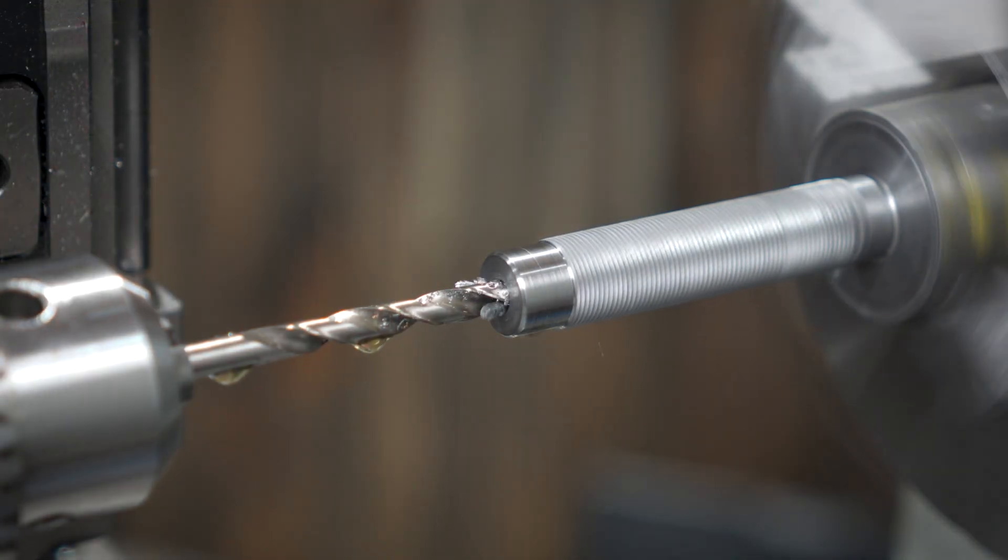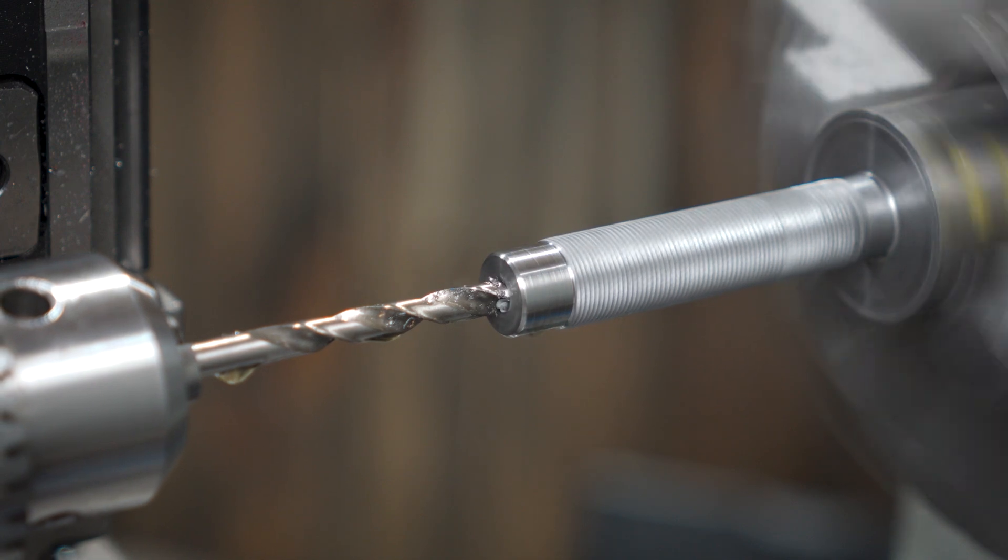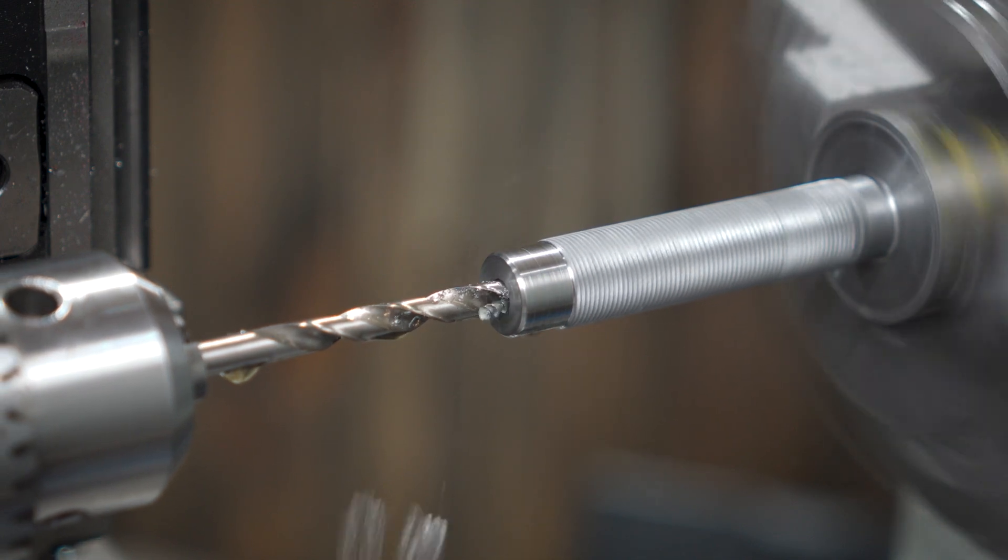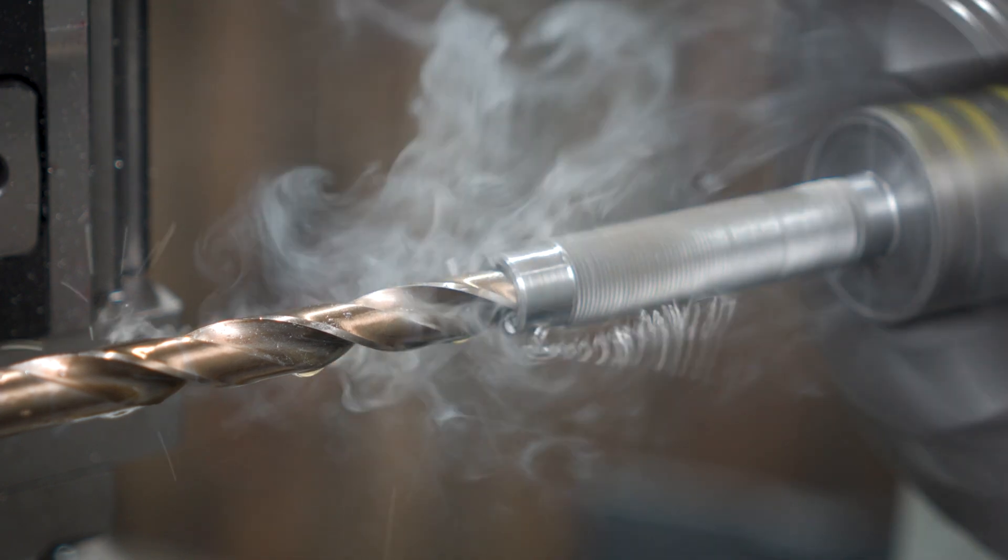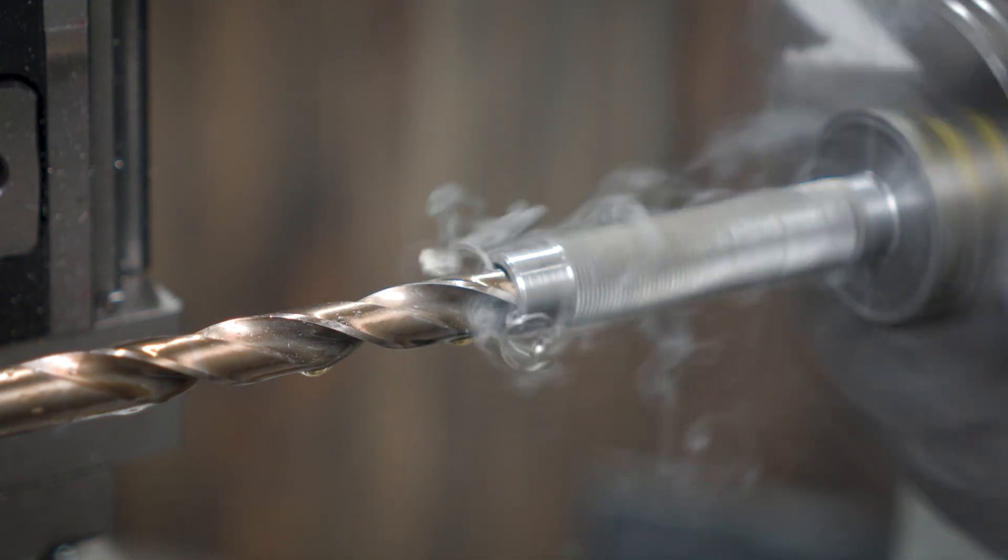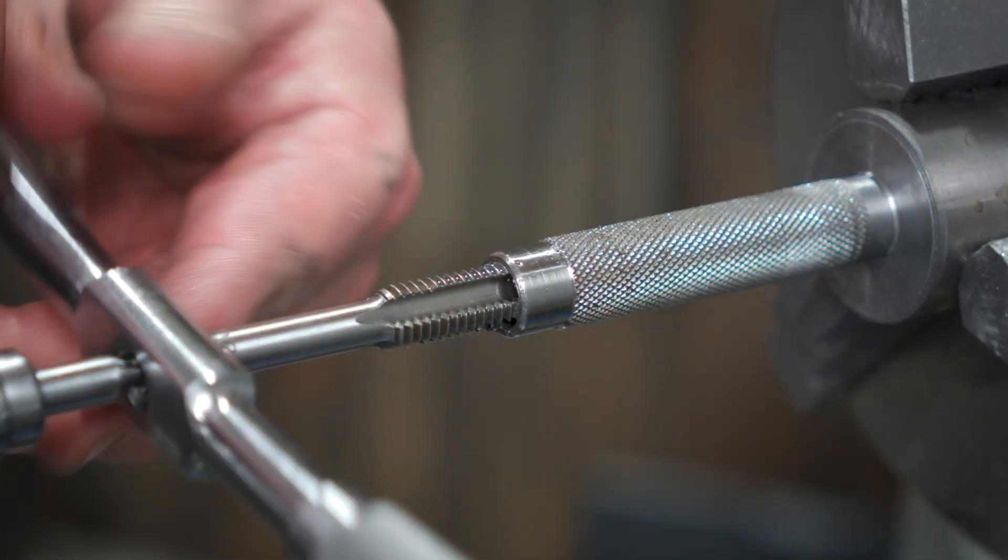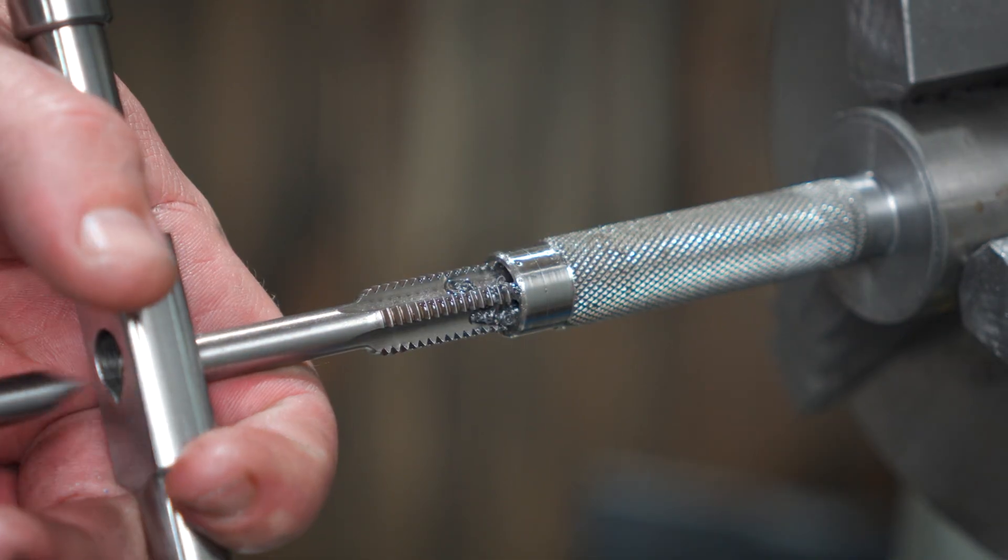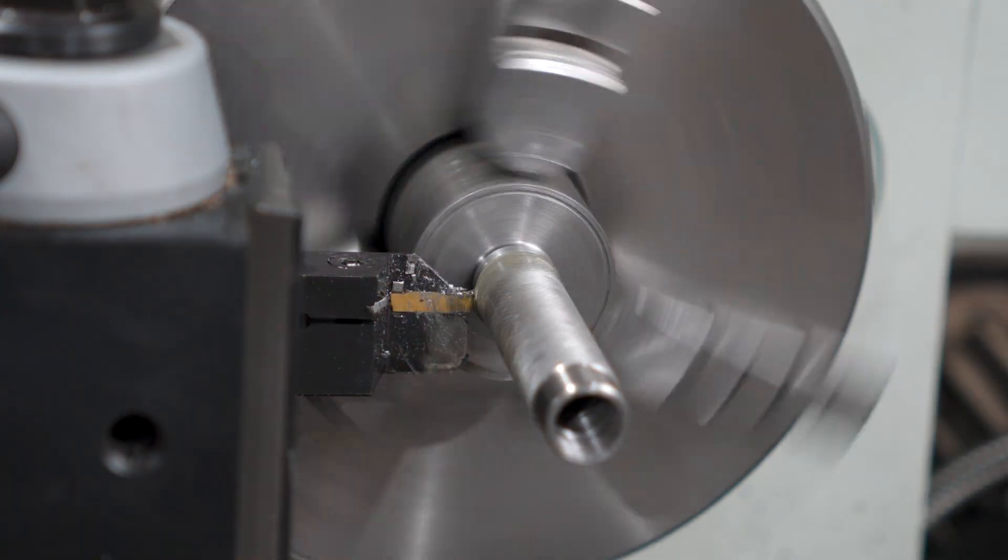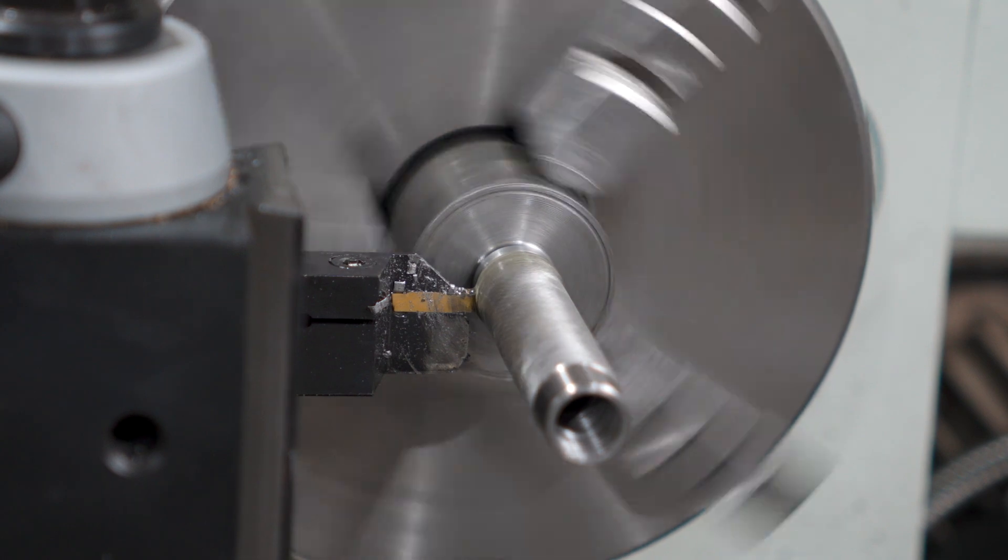Nothing groundbreaking here, just the knurl, a turned down little section at the front of the handle for aesthetics, and I can drill and tap for M12. Then I can get it parted off and put aside for the minute while we work on the main body of the handle.